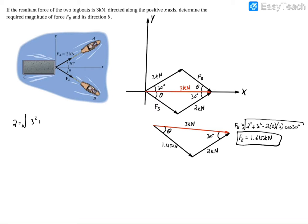So we'll have 3 squared plus 1.615 squared, here's where our known resultant force comes in, plus 2 times 3 times 1.615 times the cosine of our angle theta. So let me close that bracket now.